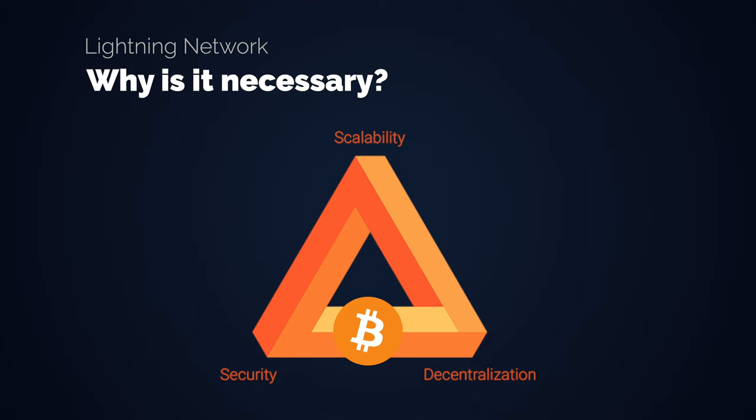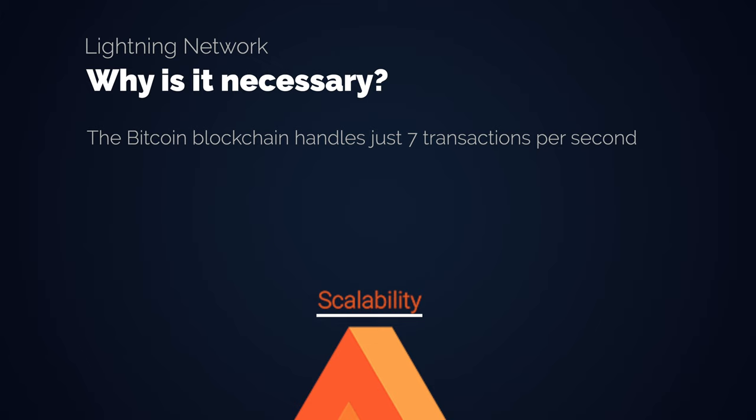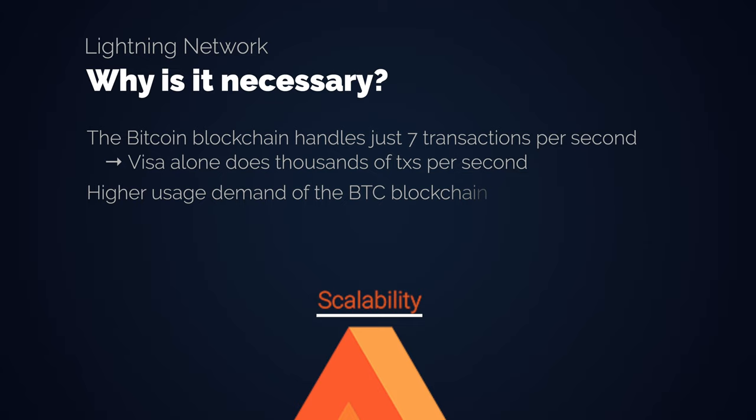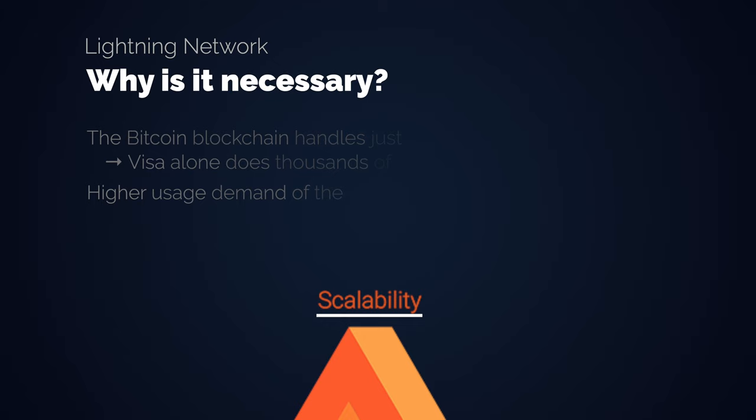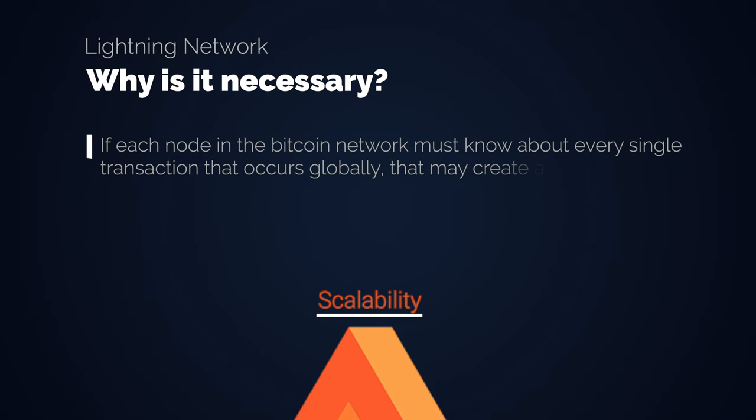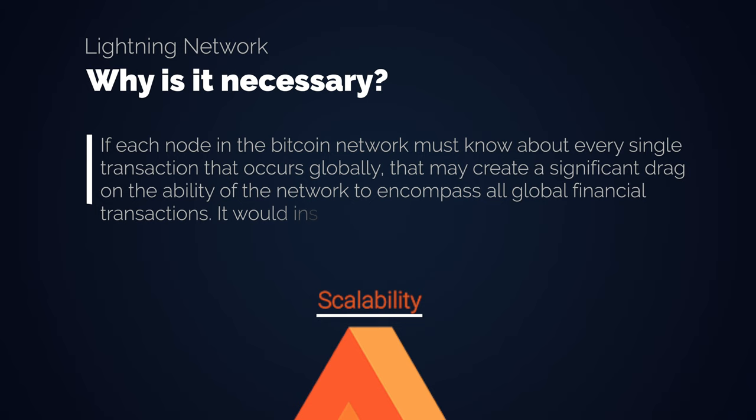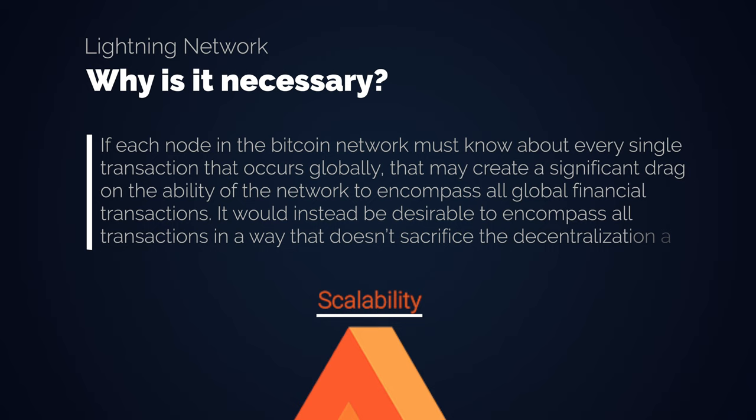Other cryptos take different tradeoffs. No altcoin is better than Bitcoin in every regard. They just optimize for other elements and in my opinion Bitcoin has made the correct tradeoffs. One of them surely is missing scalability. Scaling to billions of users on the base layer is not possible without compromising decentralization and or security. With higher usage of the base layer, transaction fees rise, which makes small payments uneconomical. If each node in the Bitcoin network must know about every single transaction that occurs globally, that may create a significant drag on the ability of the network to encompass all global financial transactions.